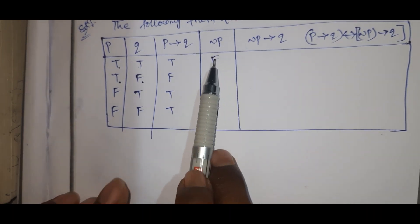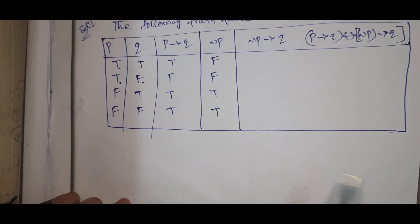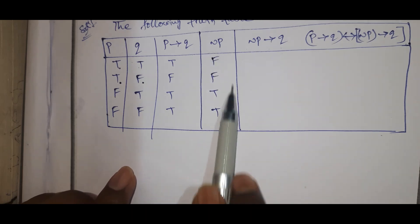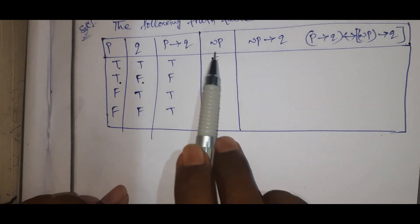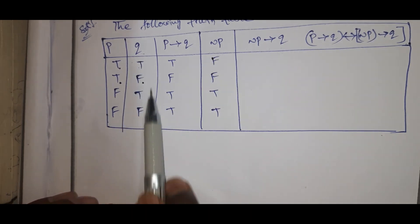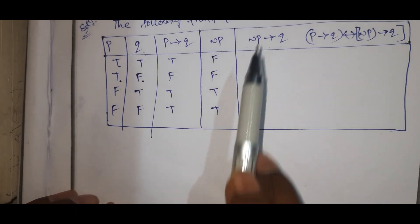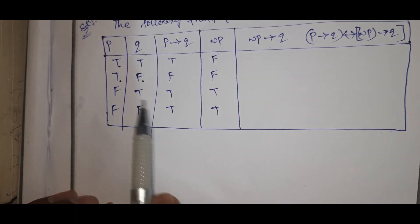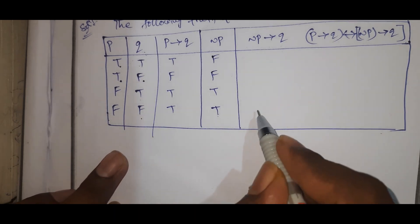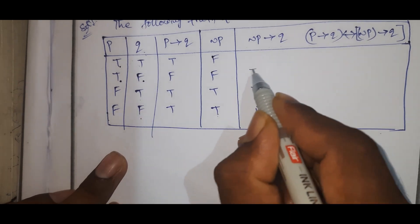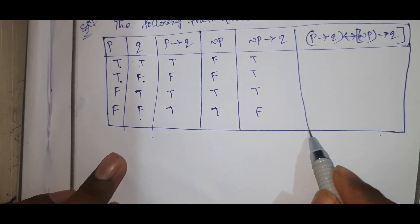Now for negation P conditional Q: the negation P is the first statement. When the first statement is false and the second statement is true, the conditional is true. When the first statement is false and second is false, the result is true. The remaining is true. Simple logic. Values are: true, true, false, true.